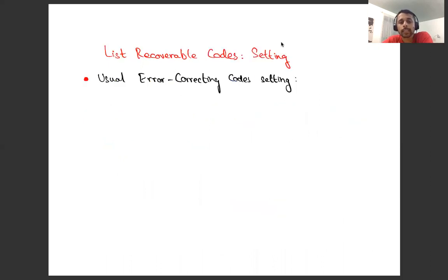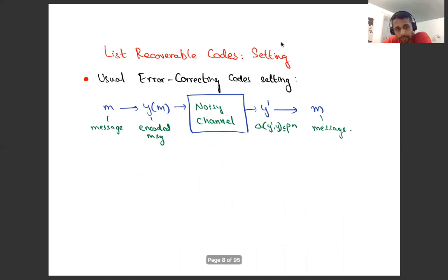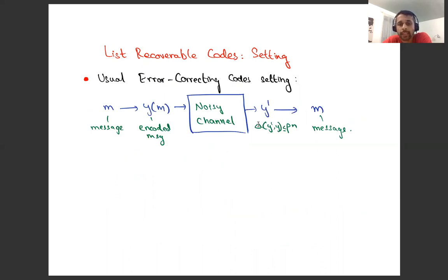If you've not seen list recoverable codes before, here's a quick overview. In the usual error correcting code setting, you have a message M, you encode it into Y using some error correcting code, you pass it through a noisy channel and you get some corrupted codeword Y'. I'm talking about worst case error — you have a guarantee on the distance between Y and Y', and you want codes so that when you decode Y', it uniquely decodes to the intended message M.